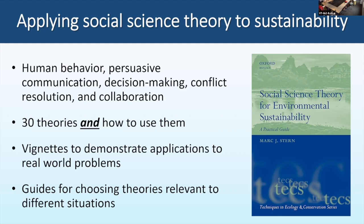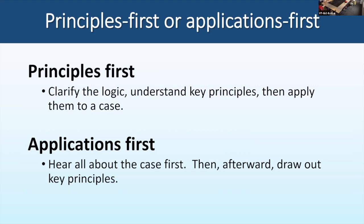When I present this stuff, I've come to recognize that human brains work differently when we start talking about theory. One way to think about this is a spectrum of how we like to learn. At one end you have principles-first: you really like to think about hypotheses or theory, learn everything you can about a subject, and then go try and apply it to a problem.